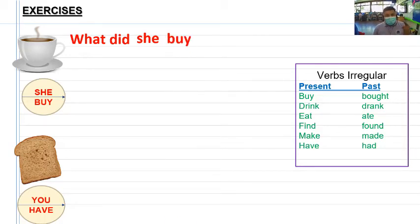Entonces yo respondo. She, el pasado de buy es bought. She bought entonces a cup of tea, una taza de té, o una taza de café. Ahí la respuesta pueden ser cualquiera de las dos.